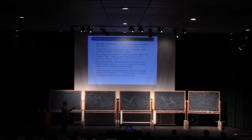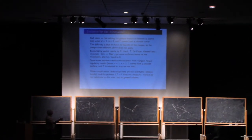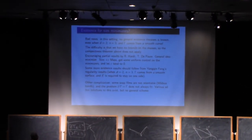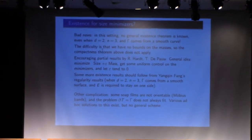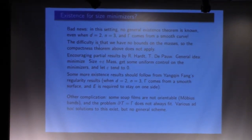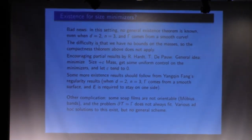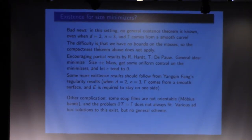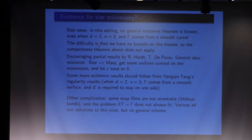The typical approach for trying to prove existence of size minimizers is to use size plus epsilon times mass, because this way you can apply compactness. The reason why the usual proof for mass-minimizing currents does not work for size is that you could have a minimizing sequence with size tending to a limit, but with mass going to infinity.